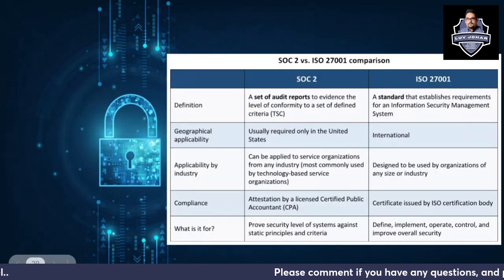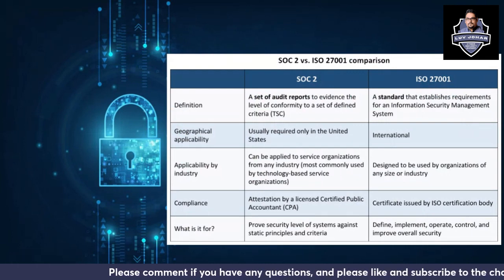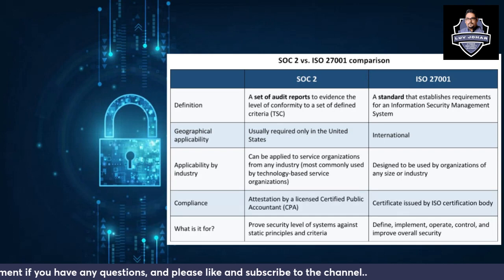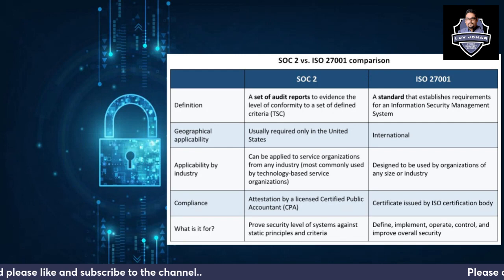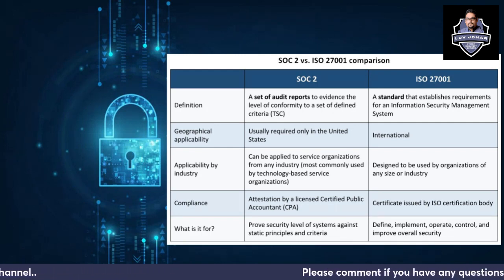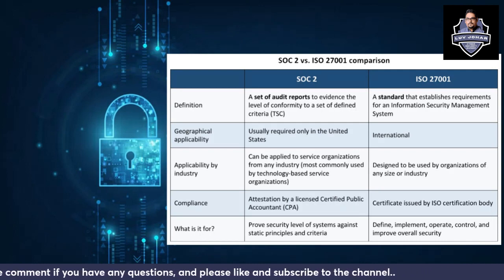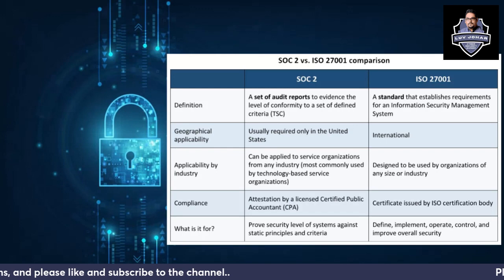SOC 2 is basically a set of audit reports. It is important because it shows evidence of the level of conformity to a set of defined criteria — the Trust Services Criteria — being managed by a service provider. ISO 27001 is a globally recognized standard that establishes requirements for an Information Security Management System for an organization.